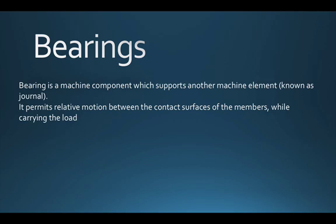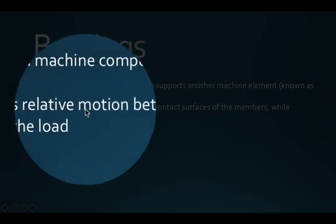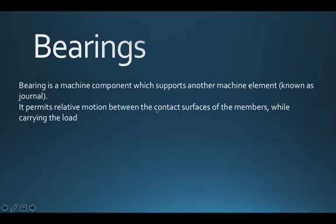A bearing is a machine element which supports another machine element, maybe known as a journal, and it permits relative motion between the contact surfaces of members while carrying the load. These are the two important functions of a bearing: first, it carries the load, and second, it permits relative motion. That is the speciality of a bearing.